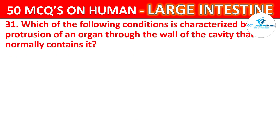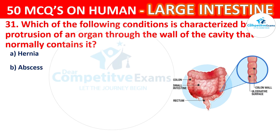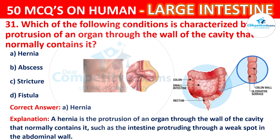Question number 31. Which of the following conditions is characterized by the protrusion of an organ through the wall of the cavity that normally contains it? The options are Hernia, Abscess, Stricture, or Fistula. The correct answer is A, that is Hernia. A hernia is the protrusion of an organ through the wall of the cavity that normally contains it, such as the intestine protruding through a weak spot in the abdominal wall.